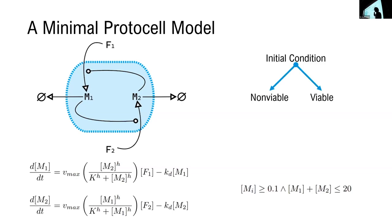So the model also has the following viability limits, where the concentration of two metabolites cannot drop beneath 0.1, and the sum of the concentrations can't go above 20, otherwise we say that the protocell bursts.